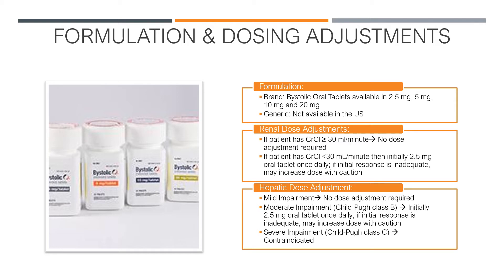For the hepatic dose adjustment: for mild impairment, no dose adjustment is required. For moderate impairment, such as Child-Pugh class B, initially 2.5 mg oral tablet of Bystolic once daily should be given, and if the initial response is inadequate, the dose may be increased, but with caution. For severe impairment, such as Child-Pugh class C, it is contraindicated to use Bystolic.